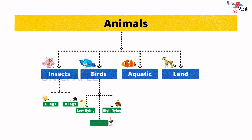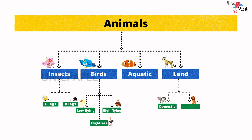Aquatic animals can live only in water. Land animals can be categorized into 2: domestic and wild animals.